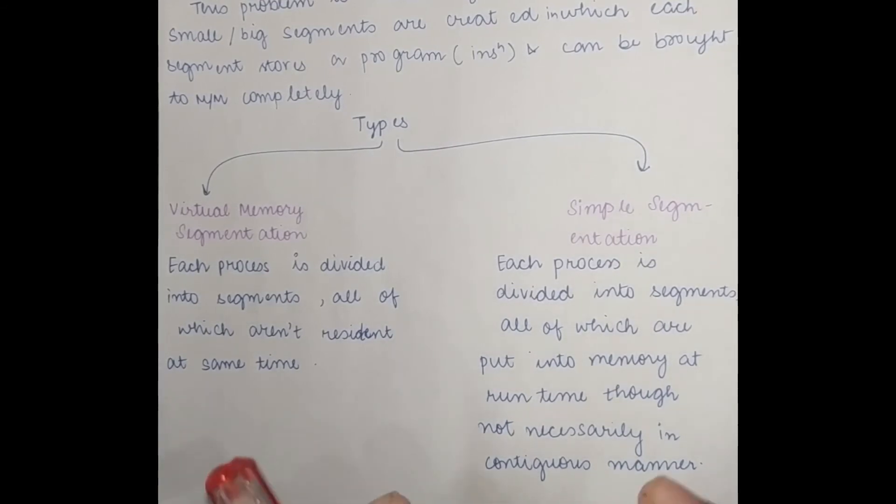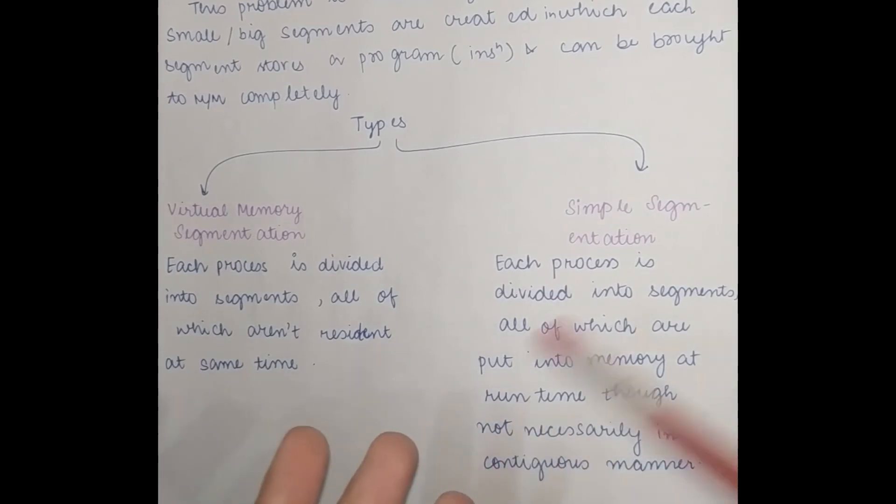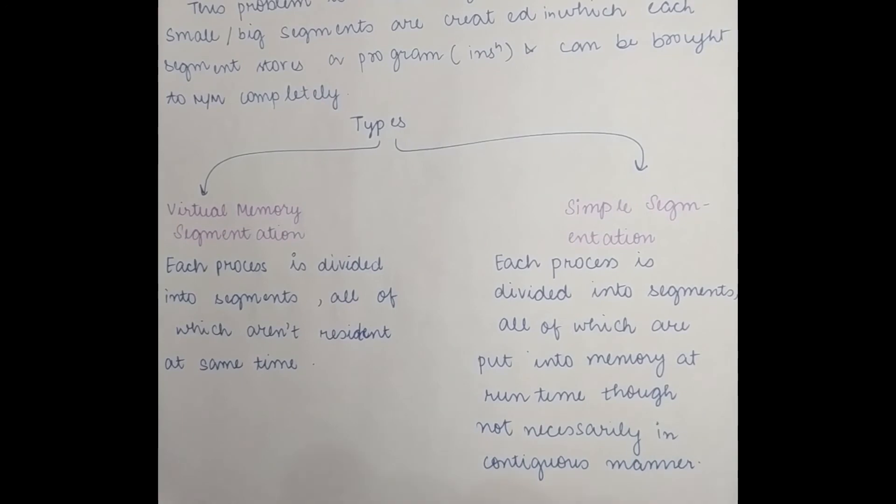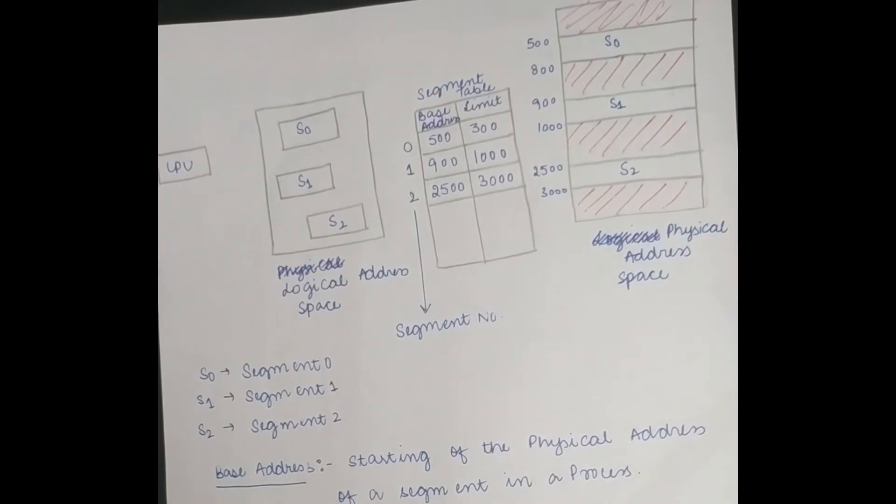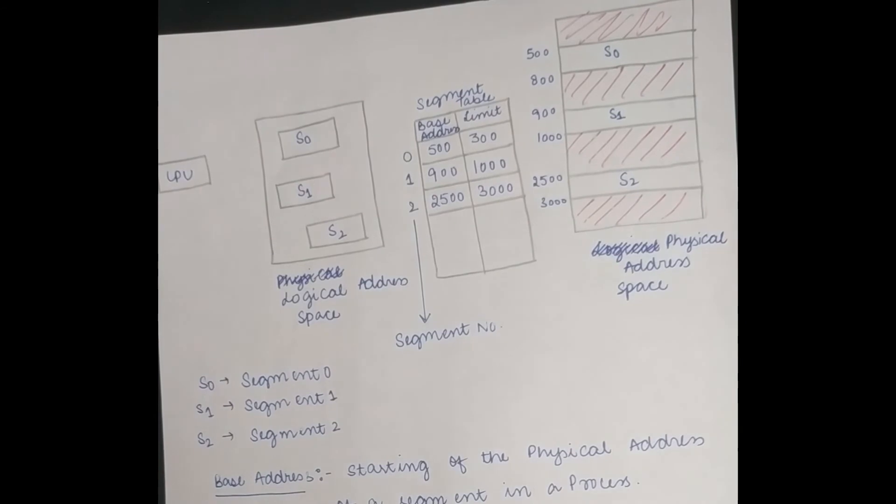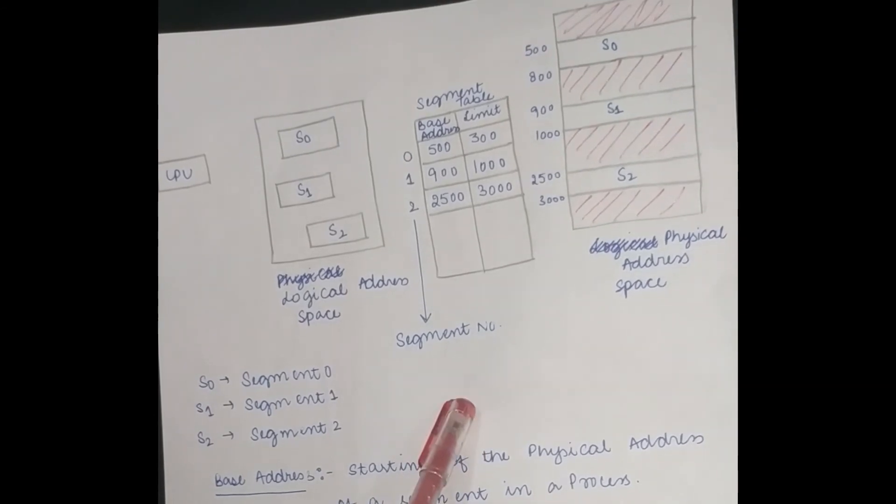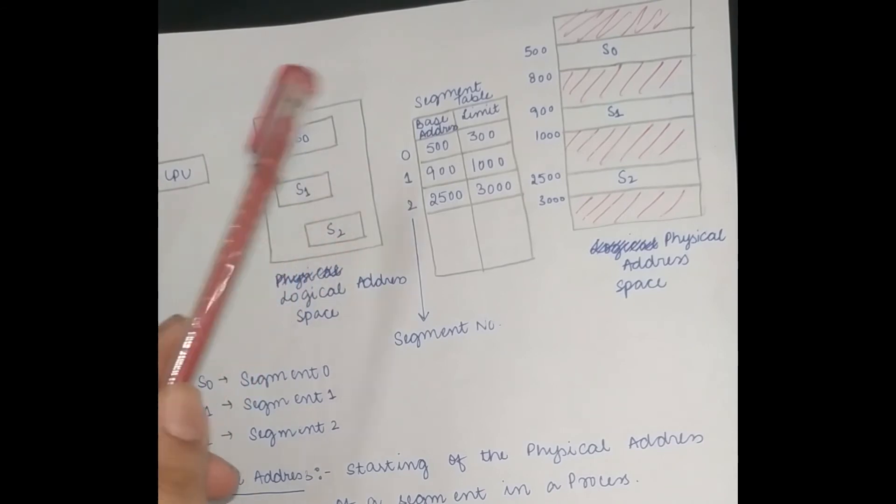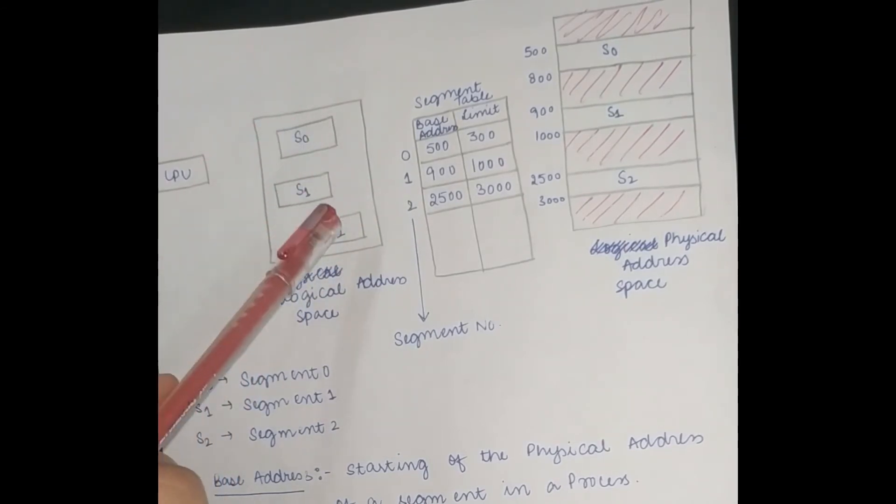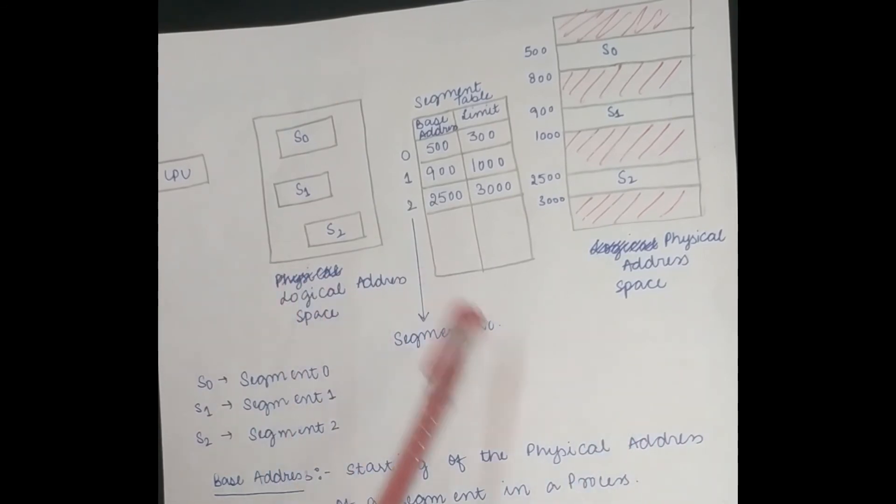So here is a logical view basically of segmentation on how it works. This is the CPU, this is the secondary memory logical address space, and this is segment table like the page table is segment table and physical address space. Physical address space means main memory: segment 0, segment 1, segment 2. We have 3 segments in secondary memory s0, s1 and s2. These are the segments. This is our secondary memory and main memory.